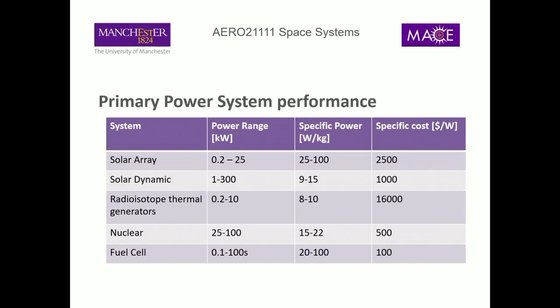Looking at primary power system performance: solar arrays can currently get up to 0.2 to 25 kilowatts, with reasonably good specific power and reasonable cost. They're quite a common power source. Because they're effectively renewable, they can be used for very long duration missions — 15 to 20 years — and should operate effectively over that period, though there are things that influence their performance over time.